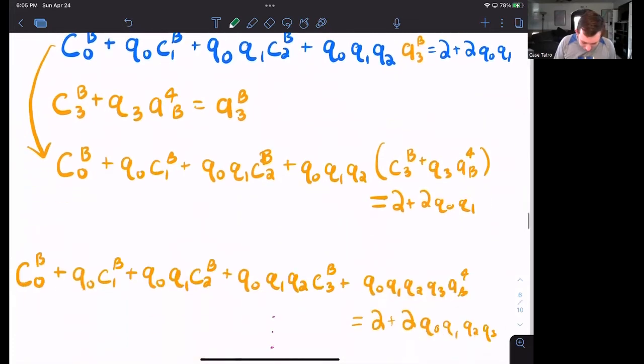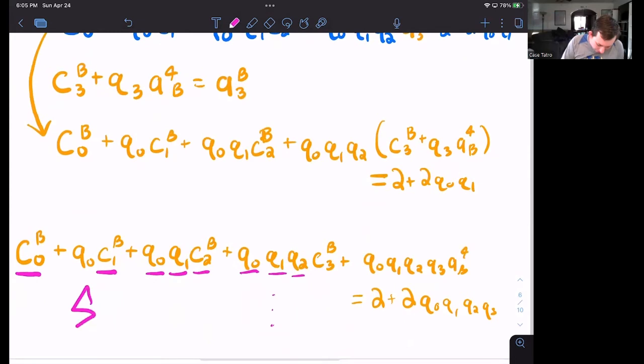But now let's look at this and see if we can find any sort of pattern. Well, I see here, this is C0, this is Q0, C1, this is Q0, Q1, C2, and this is Q0, C1, C2. So this is something like, well, I've got a sum, I've got beta to the T times C0B, because right, I know that this is the same as Bill's consumption in period zero.